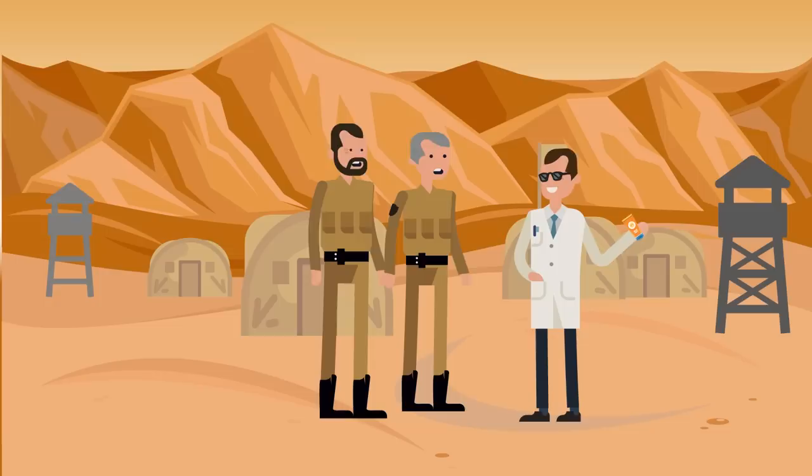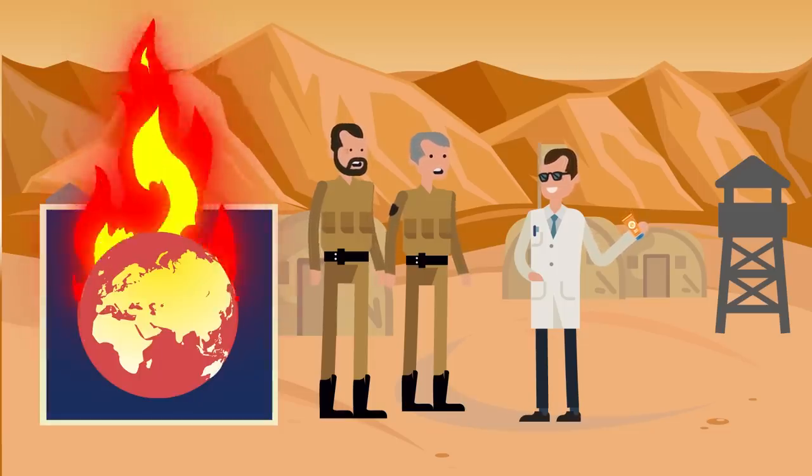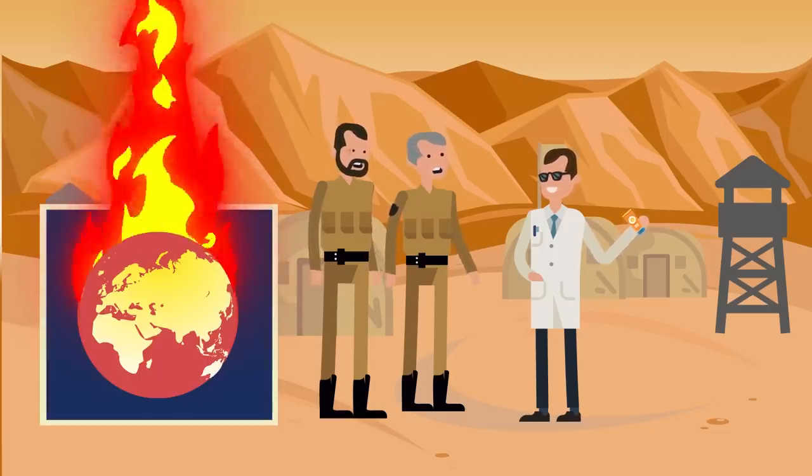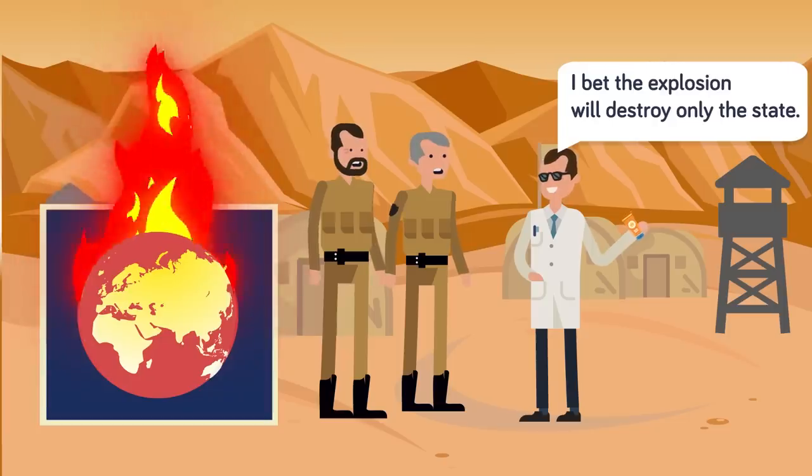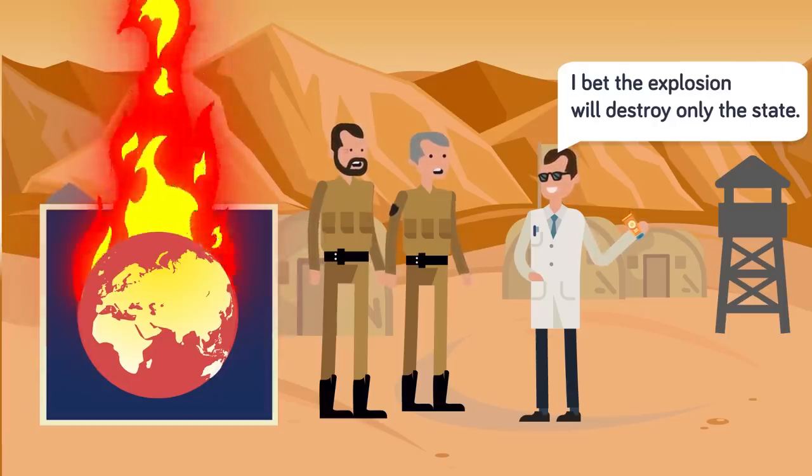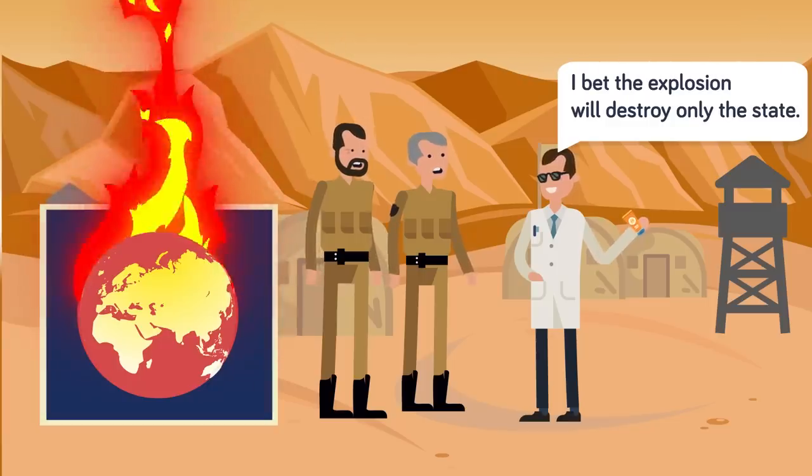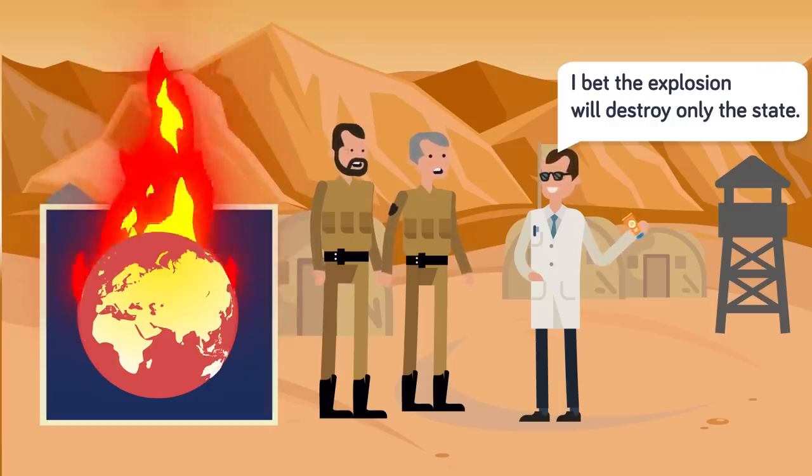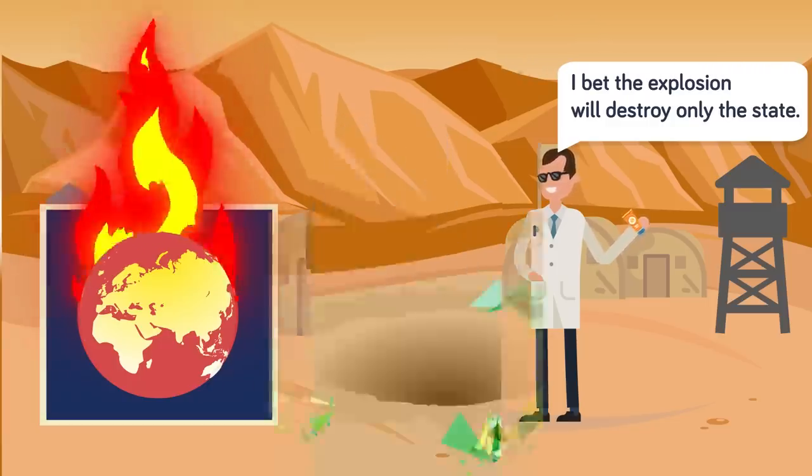19. Scientist Enrico Fermi offered to take wagers among the military and scientists on whether the test would ignite the atmosphere, and if it did whether it would destroy only the state or incinerate the entire planet. This was a joke, but calculations indicated there was a tiny chance that such a scenario could happen, and for a long time it seriously concerned all the scientists involved.